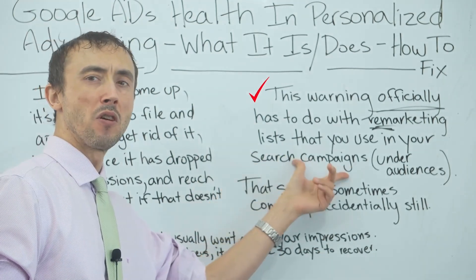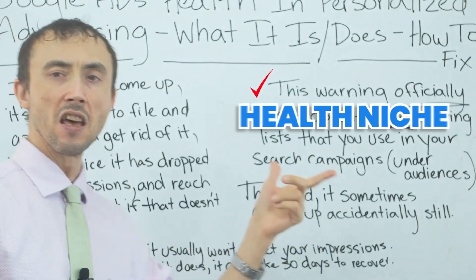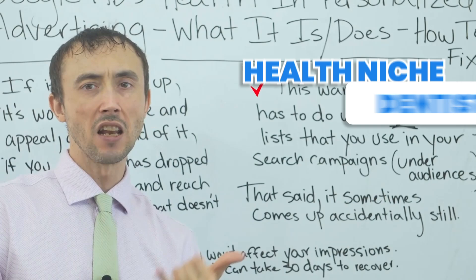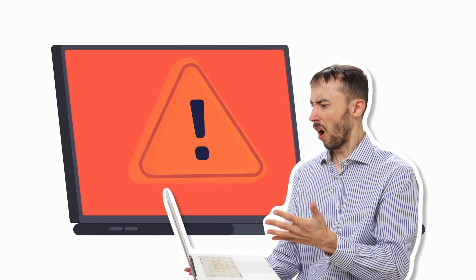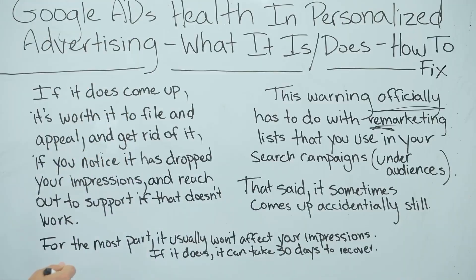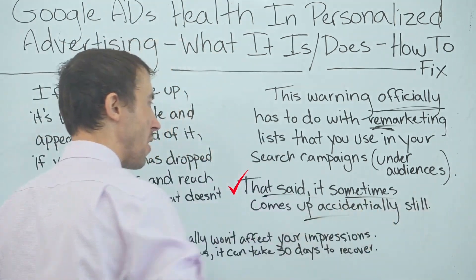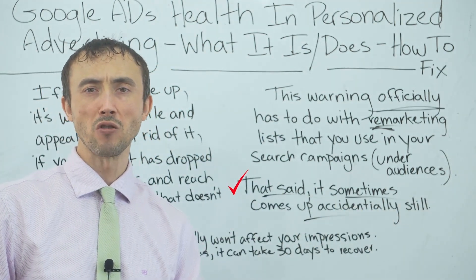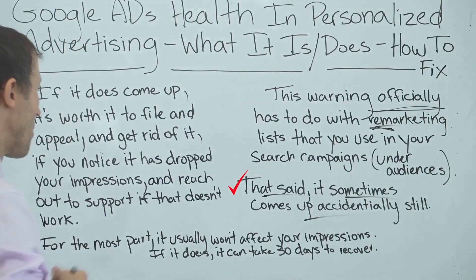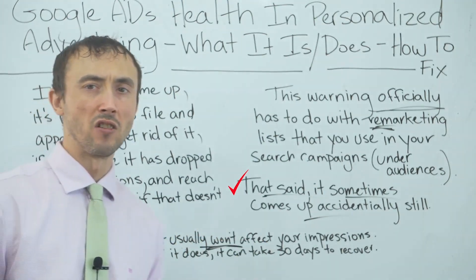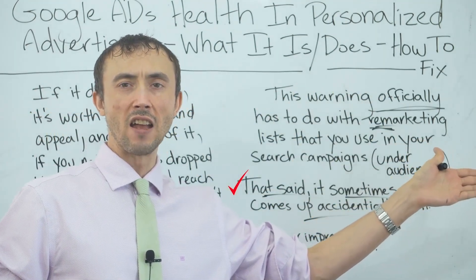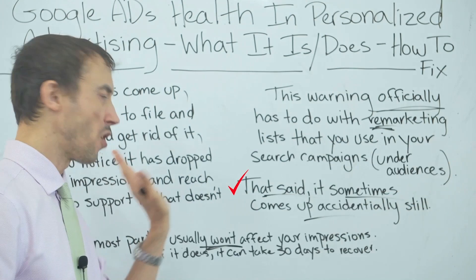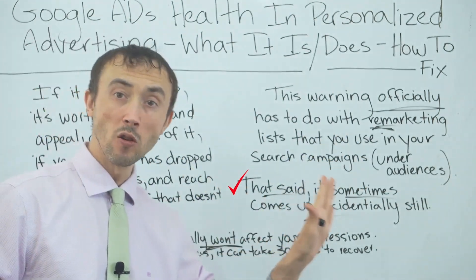If you have remarketing on and you are in a health niche — dentistry, dermatology, drug rehab centers — you will get this warning to show up basically every time. That's what it's actually for. Sometimes it shows up accidentally anyway — Google's system is frustrating like that — but for the most part it won't actually affect your impressions. All it does is prevent remarketing on your search ads.